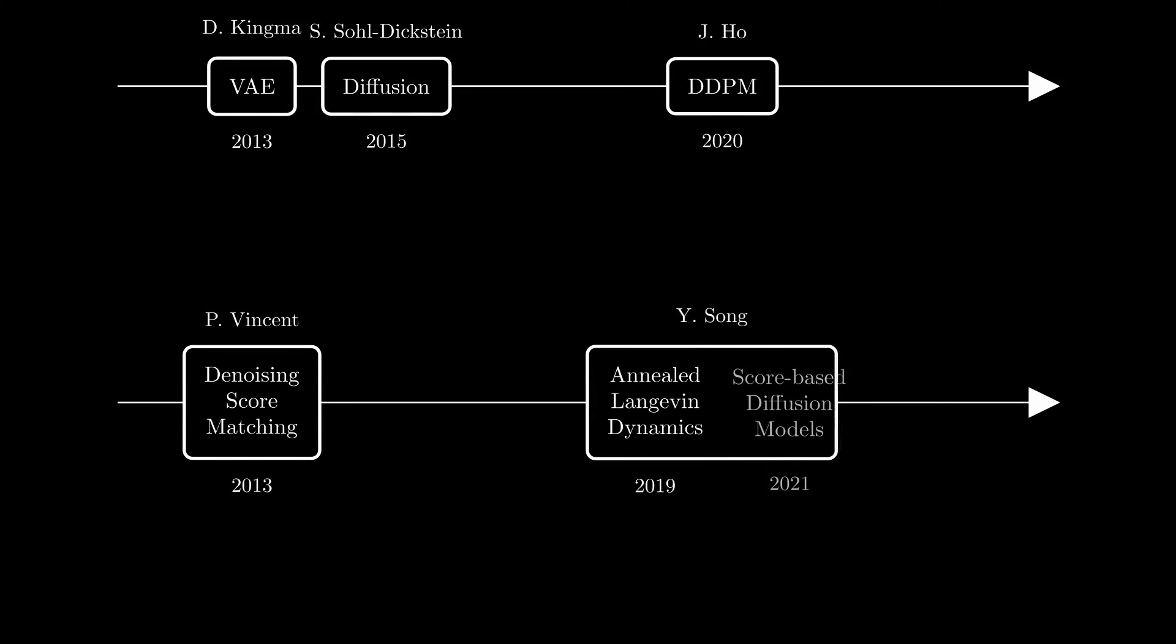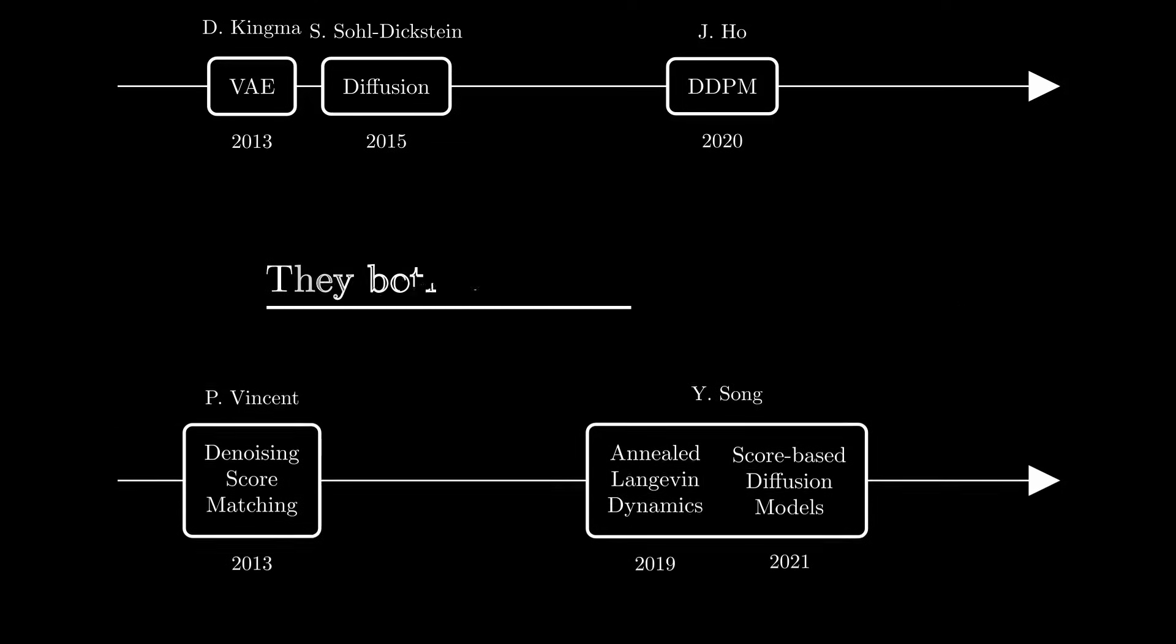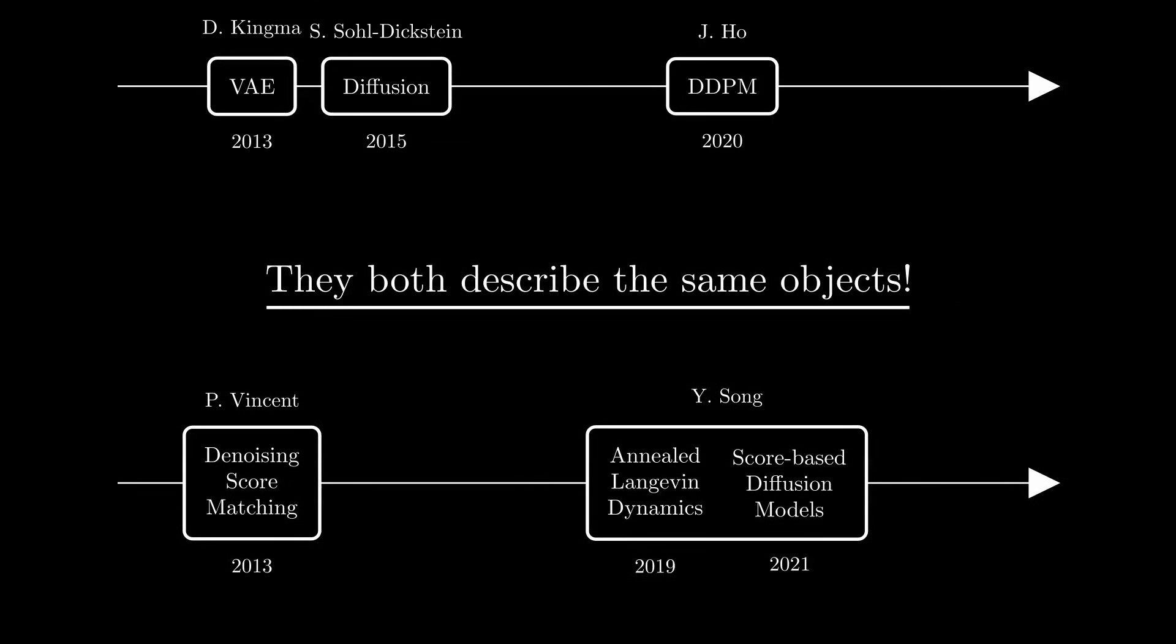Yang Song then introduced a fundamentally different perspective in 2021, which we usually call score-based diffusion models. Personally, I prefer this second formulation. However, keep in mind that both point of view describe the very same objects, and both of them are equally valid. So let's see what the score-based formulation is all about.